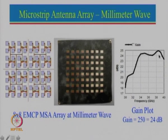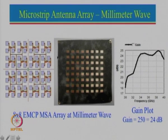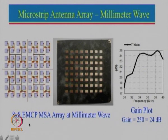Now let us look at another example: an 8 by 8 electromagnetically coupled microstrip antenna array at millimeter wave. Millimeter wave is generally defined from 30 GHz to 300 GHz. We have used this number of elements because typically the gain obtained is about 6 to 7 dB using a single element. If you want larger gain, we can use multiple number of elements.